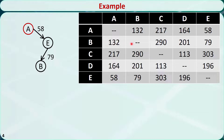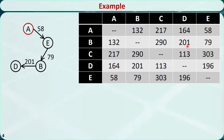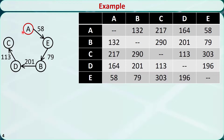Now let's check this rule for city B. The nearest city to city B is city E, but it is already visited. The second nearest is city A, but it is also visited. The third nearest city is city D, so let's go to city D, and the distance is 201. Let's check this rule for city D. The nearest city is city C; it is not visited yet, so we go to city C, and the distance is 113. Last, all the cities have been visited. We directly go from city C back to city A, and the distance is 217.